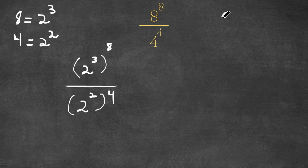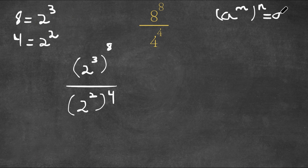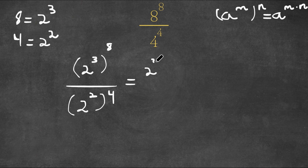Now, if we have something in the form a to the power of m to the power of n, this is actually equal to a to the power of m times n. So we have 2 to the power of 3 to the power of 8, which becomes 2 to the power of 3 times 8. And over that, 2 to the power of 2 to the power of 4, which becomes 2 to the power of 2 times 4.